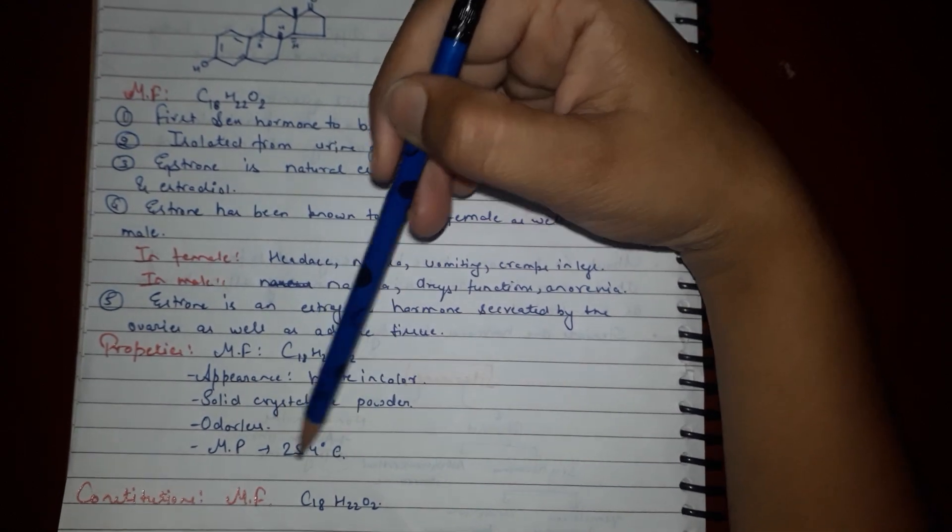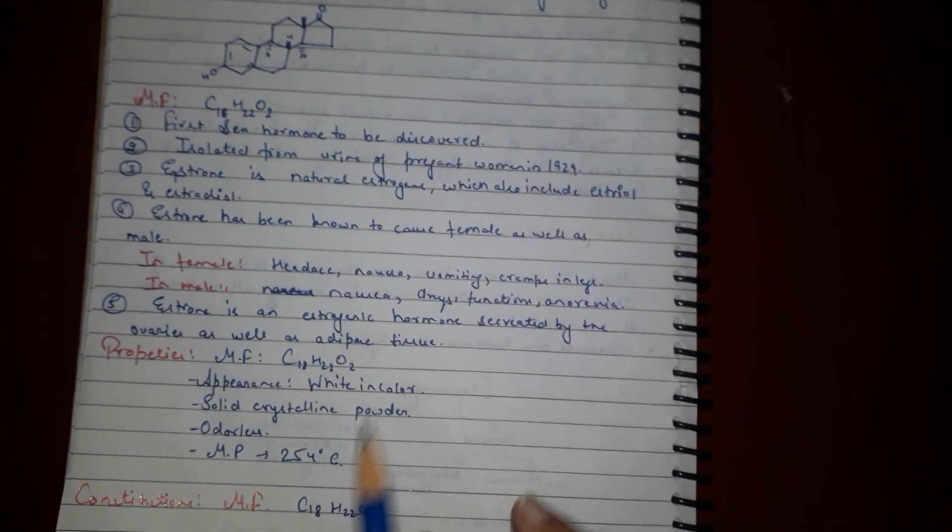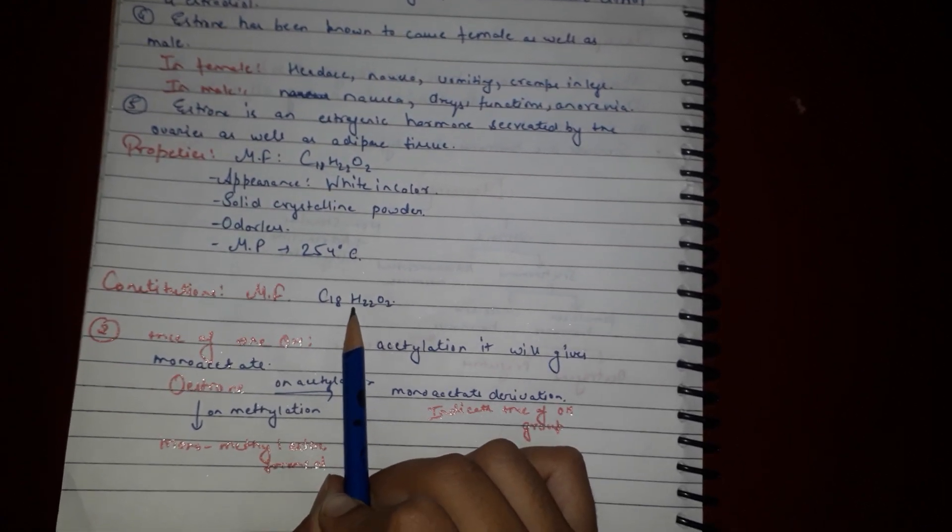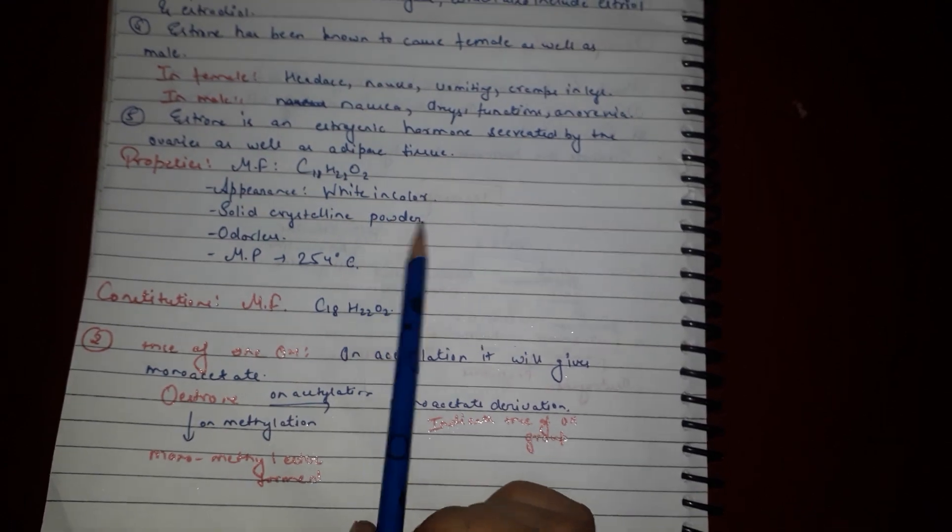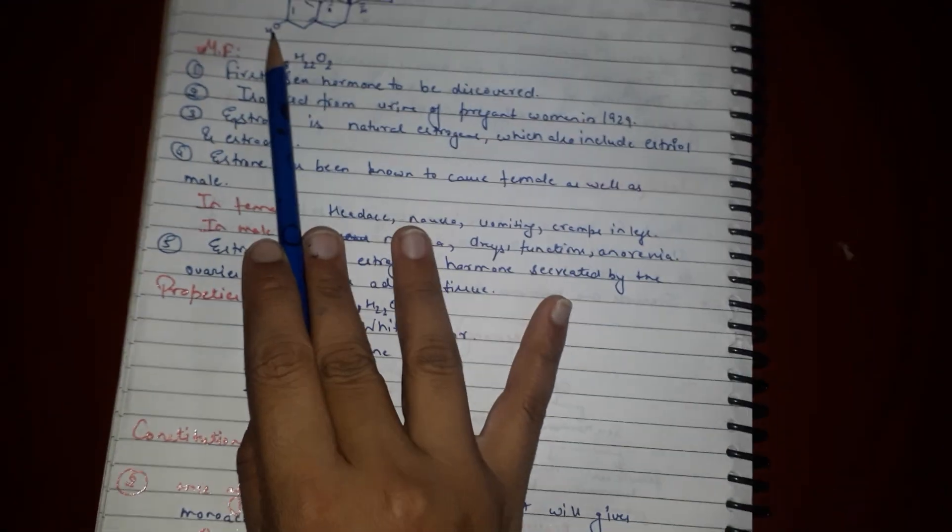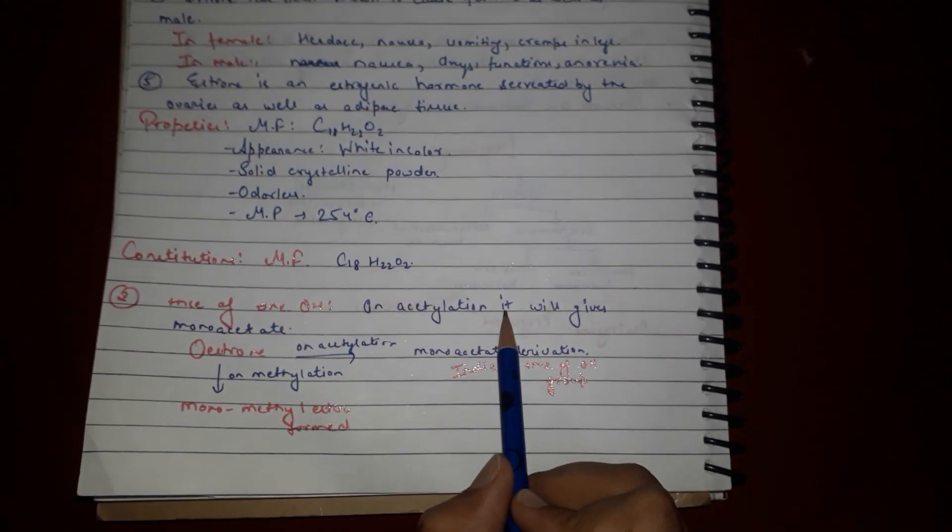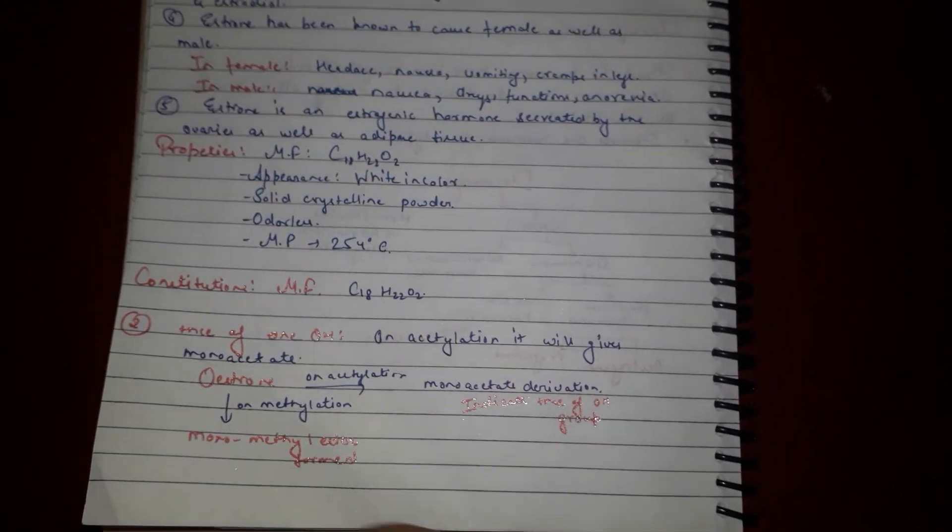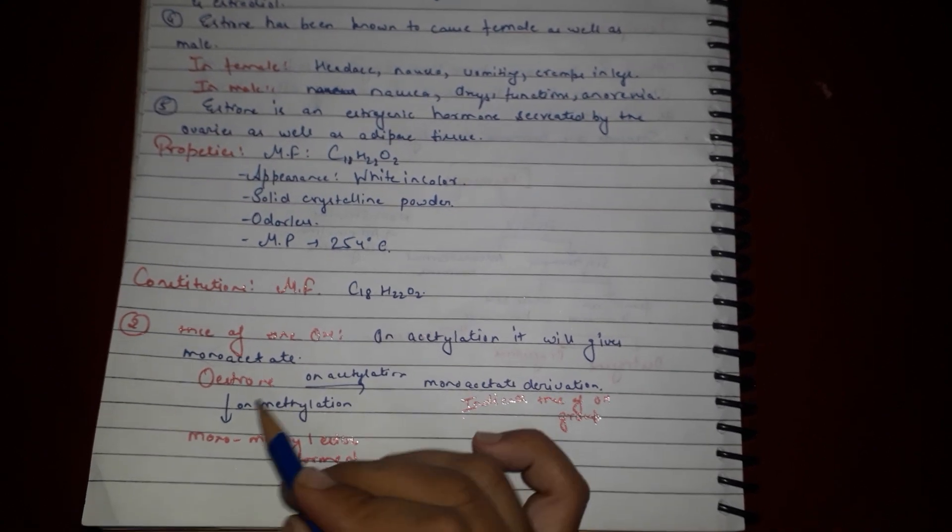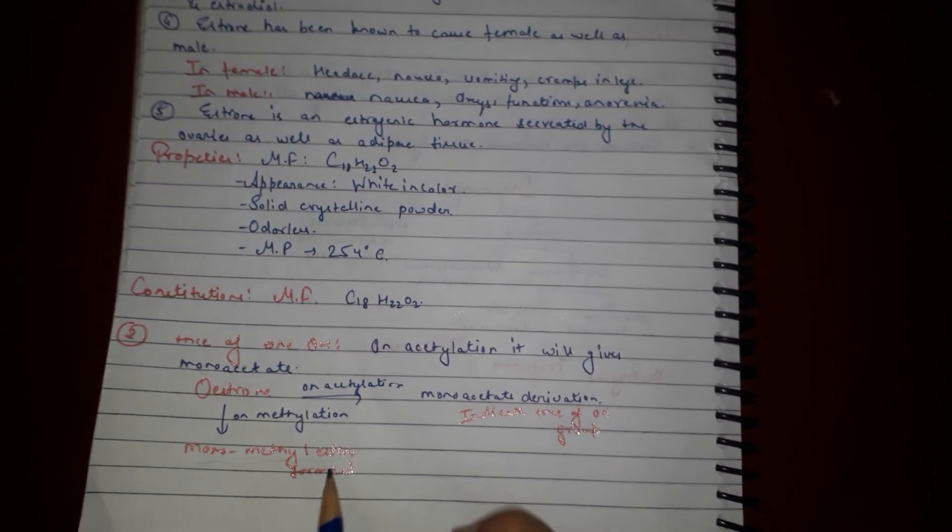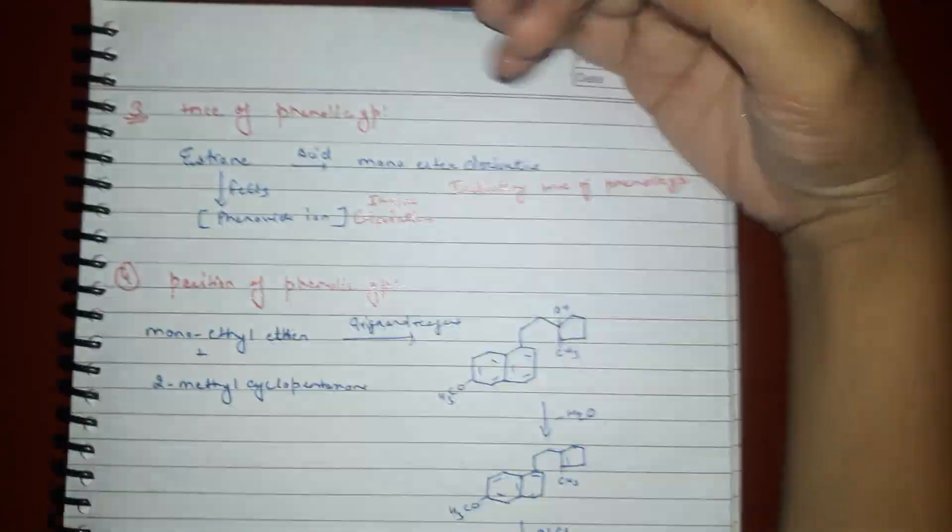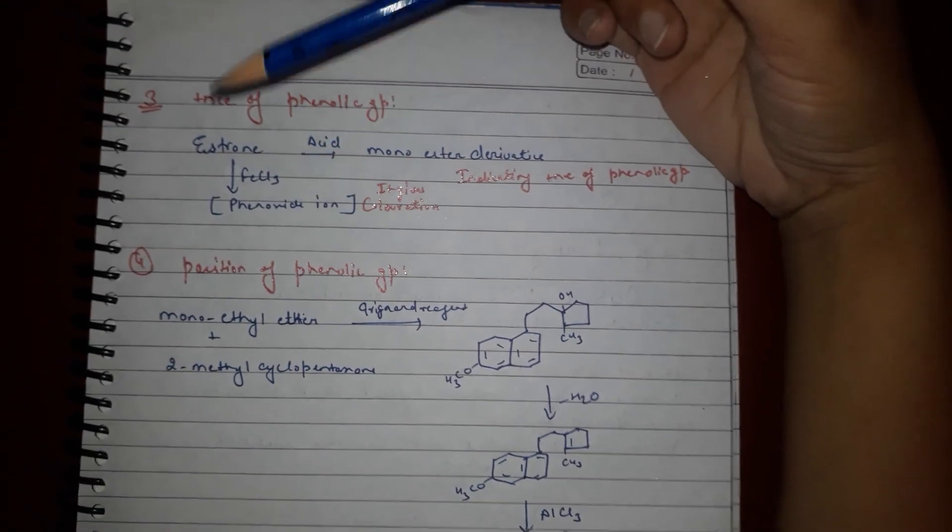Constitution: molecular formula C18H22O2, presence of one OH group in structure. On acetylation it gives monoacetate, which shows that there is presence of one OH group. On methylation it gives monomethyl ether formed.